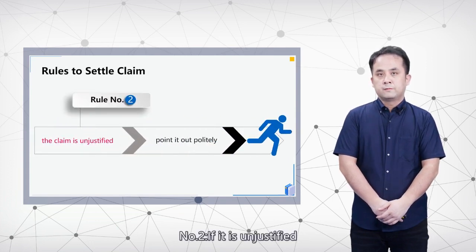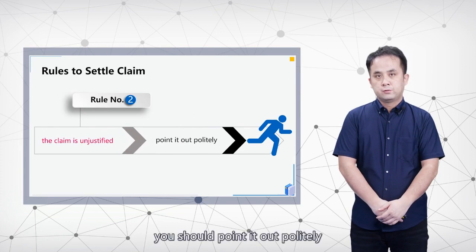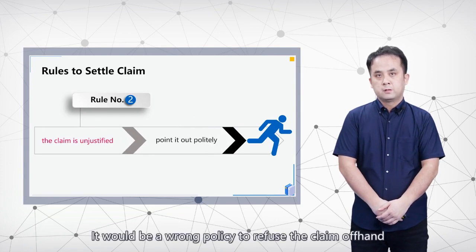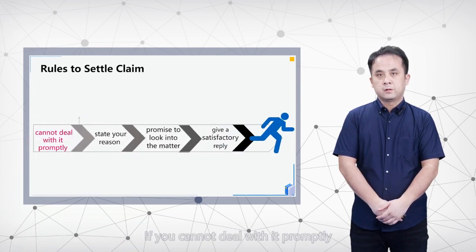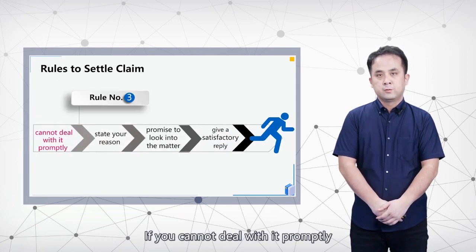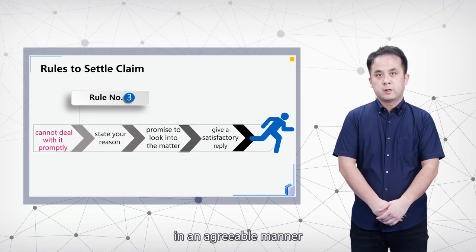Number two: if the claim is unjustified, you should point out politely. It would be bad policy to refuse the claim offhand. Number three: if you cannot deal with it promptly, you should state your reason in an agreeable manner.